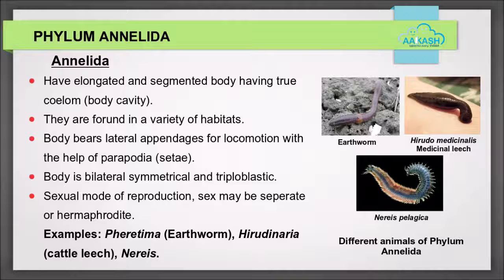Phylum Annelida: these animals have an elongated and segmented body with a true coelom, that is a body cavity. They are found in a variety of habitats. Their body bears lateral appendages for locomotion with the help of parapodia, that is setae. The body is bilaterally symmetrical and triploblastic. These animals have a sexual mode of reproduction and both sexes may be separate or hermaphrodite. Examples: Pheretima (earthworm), Hirudinaria (cattle leech), and Nereis.